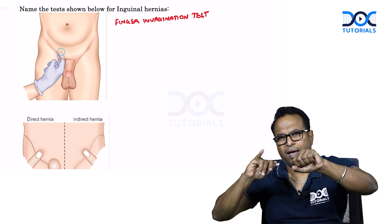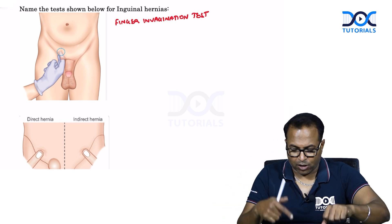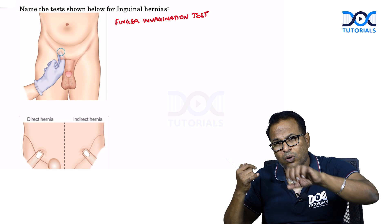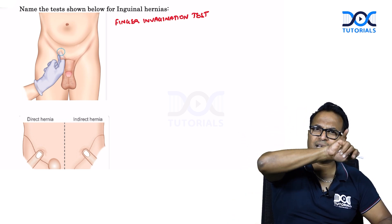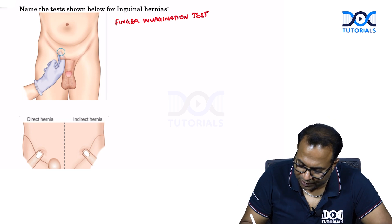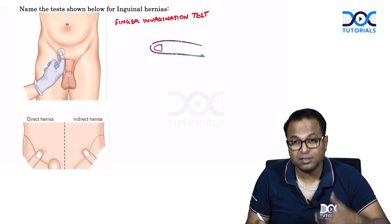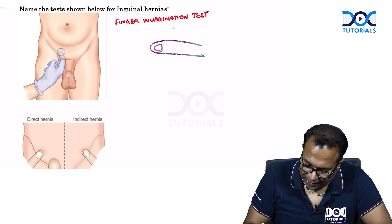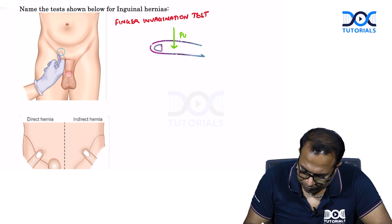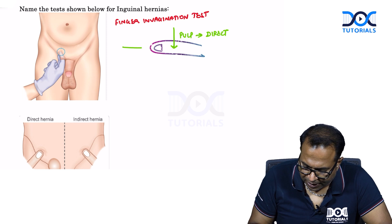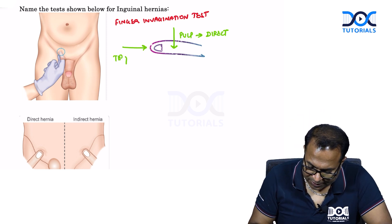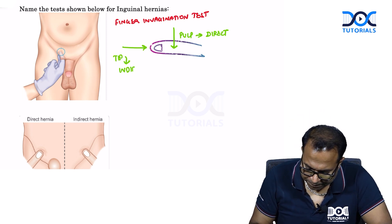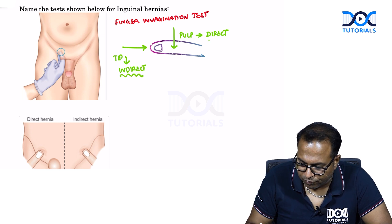Grasp the scrotal skin and put the little finger — not the index finger — into the superficial ring and into the canal. Put the finger through the canal and examine it. When the finger is placed, ask the patient to cough. If the impulse is felt on the pulp of the finger, it is a direct hernia. If the impulse is felt at the tip of the finger, it is an indirect hernia.